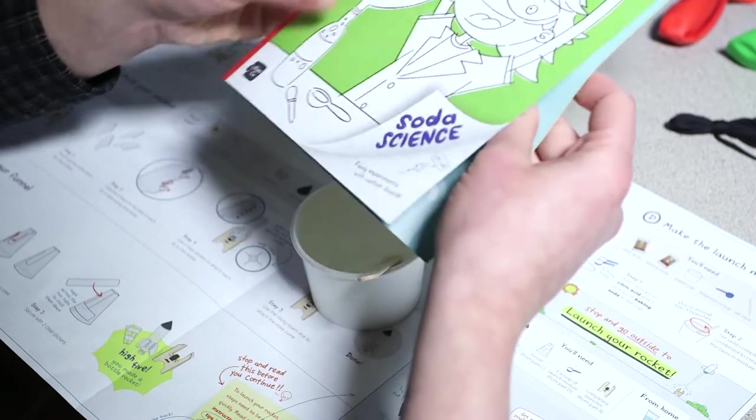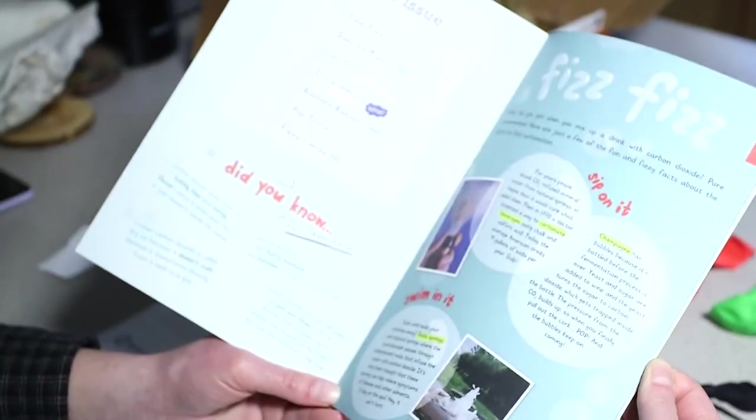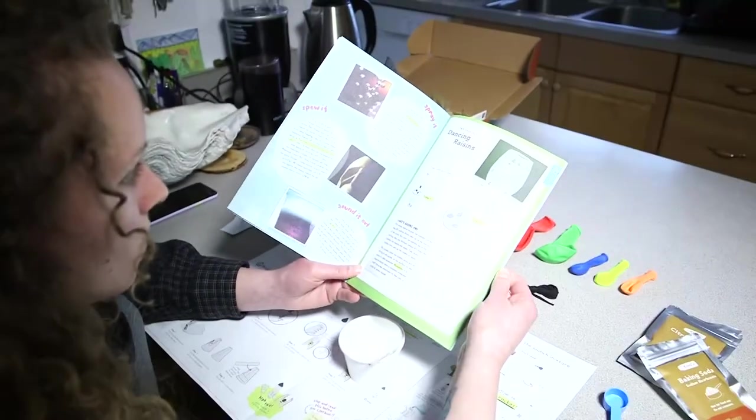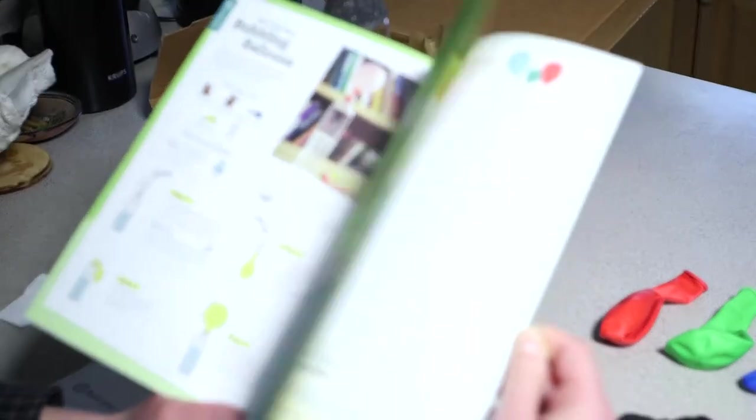There are some fun other projects in here in this booklet that you can use the baking soda and citric acid for. So if you don't want to use it all on your rocket, feel free to look through the pamphlet for some other ideas.